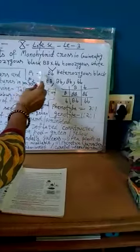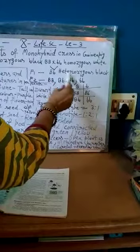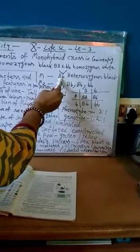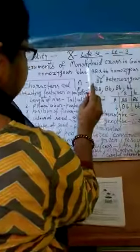In F1 generation, all will be heterozygous black with capital B and small b. But we don't know if it will be capital B capital B or small b by looking at phenotype. When we get the F2 generation...